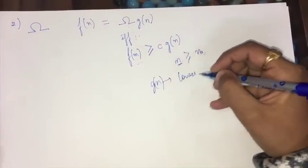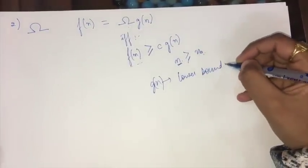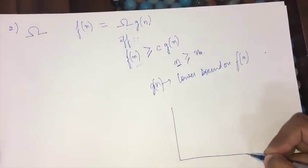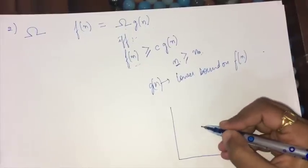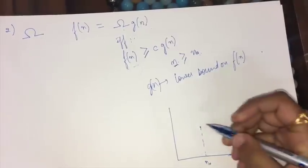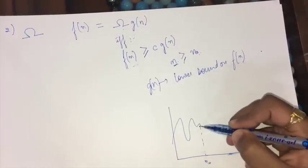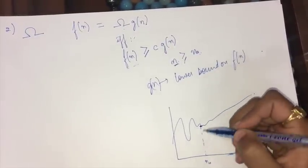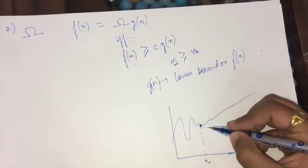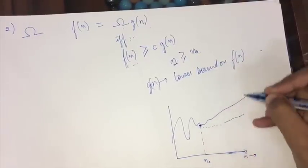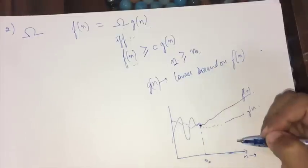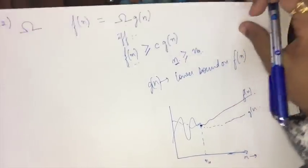If function f(n) is Omega of g(n), then g(n) is termed as the lower bound on function f(n). On the graph, after n₀, g(n) has to be smaller than f(n), and before n₀ it can have any value.